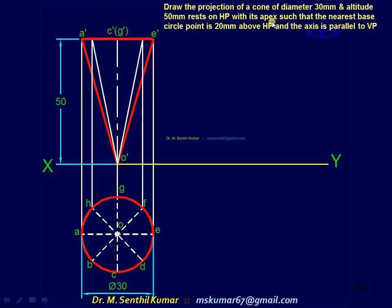Now read the problem. It is tilted such that the nearest base circle point is 20 above. So you have to tilt the solid this side, right side, such that the point E' is 20 above HP. So how to do?